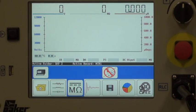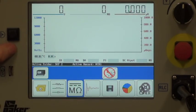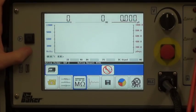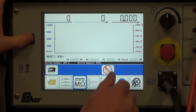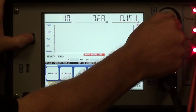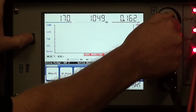To start the test, I simply activate the test button and increase the voltage using the voltage relay. I'm going to increase the voltage to 500 volts for this particular test.